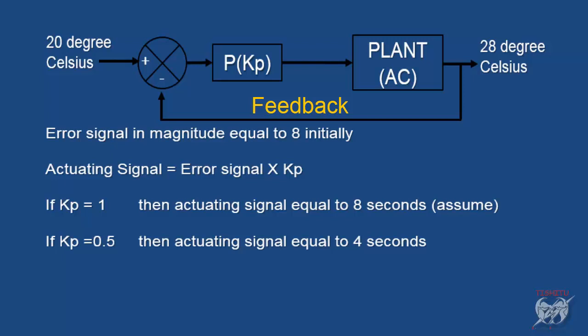If we assume Kp equal to 1 then according to that actuating signal become 8 seconds. It means desired goal achieve in 8 seconds. If Kp equal to 0.5 then actuating signal become 4 seconds. Goal achieve faster than previous case. In this way proportional controller helps to achieve goal fast and vice versa depend on requirement.